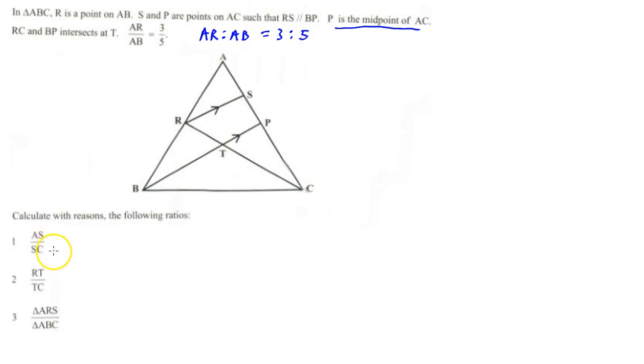AS over SC - so there's AS, there's SC. What do we have? We have parallel lines. What does the proportion theorem say? The proportion theorem says that if two lines are parallel in a triangle, their sides are going to be in proportion.